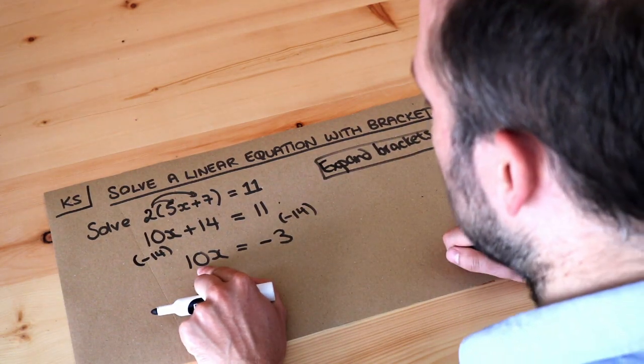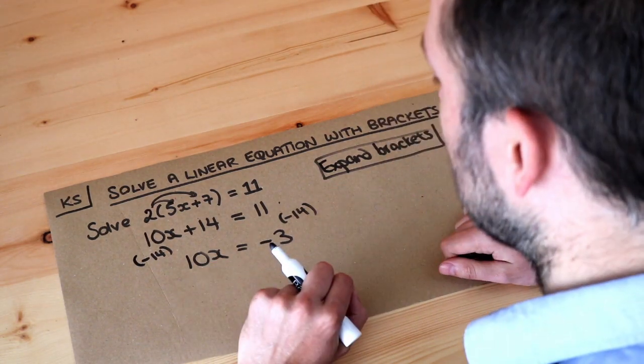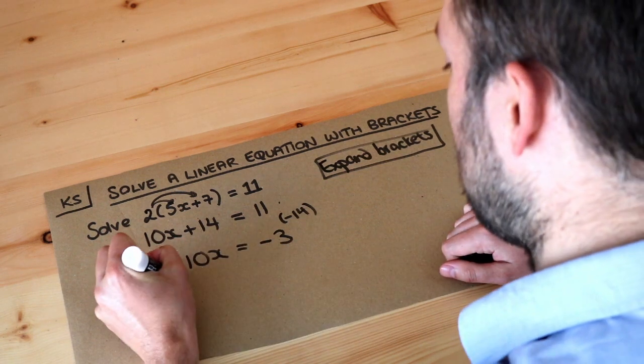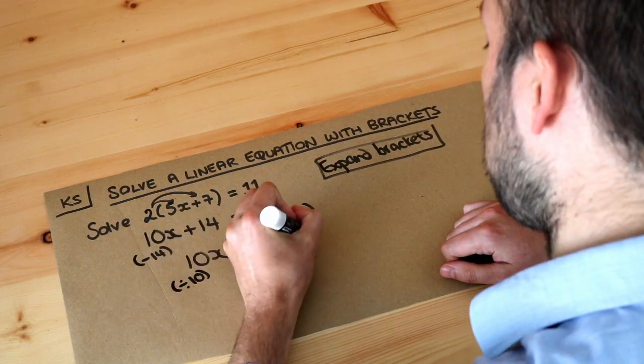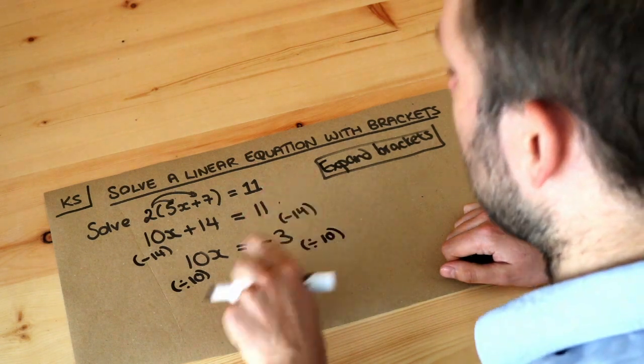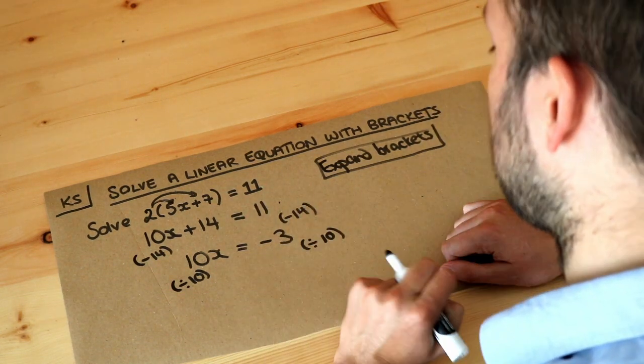Then x is being multiplied by 10. To get rid of that times by 10, we do the opposite, which is to divide by 10. We do that to both sides of the equation. Whatever we do to the left-hand side, we have to do the same to the right-hand side.